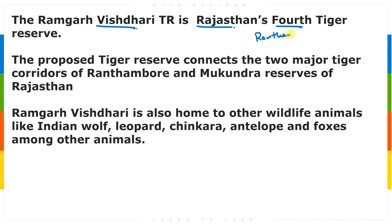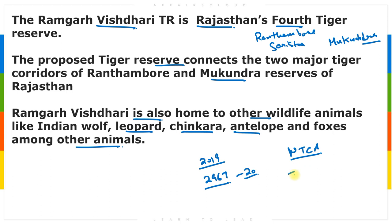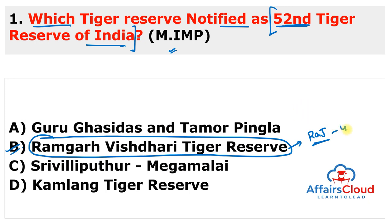Earlier there were three tiger reserves in Rajasthan: Ranthambore, Sariska, and Mukundara. The proposed Ramgarh Vishdhari Tiger Reserve connects the two major tiger corridors of Ranthambore and Mukundara. In-principle approval was given by the National Tiger Conservation Authority under the Ministry of Environment, Forest and Climate Change on July 5, 2021. According to the 2019 tiger census, there are 2,967 tigers in 20 states, accounting for 70% of the world's tiger population.